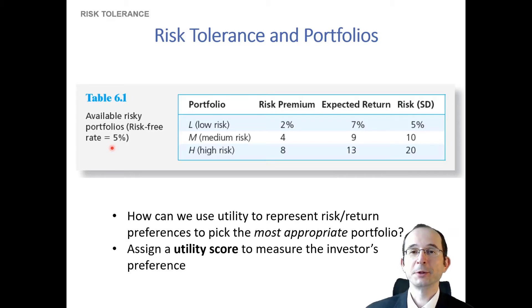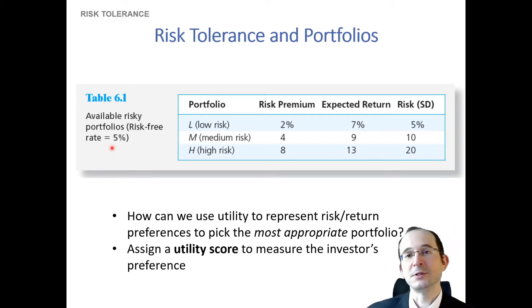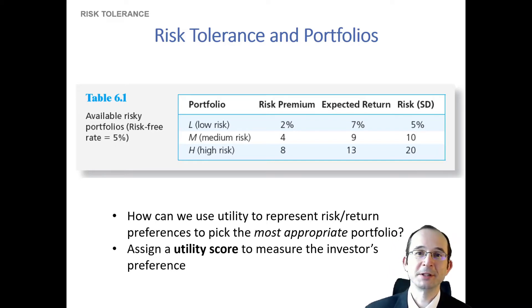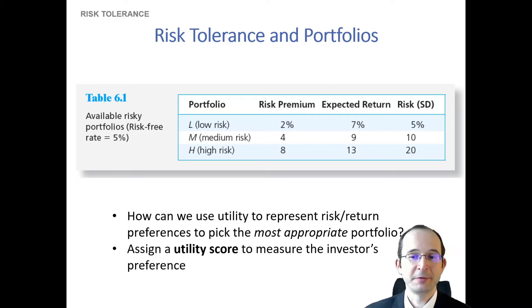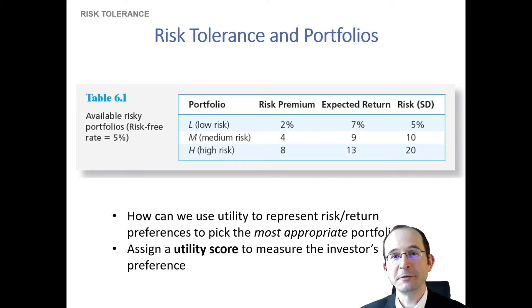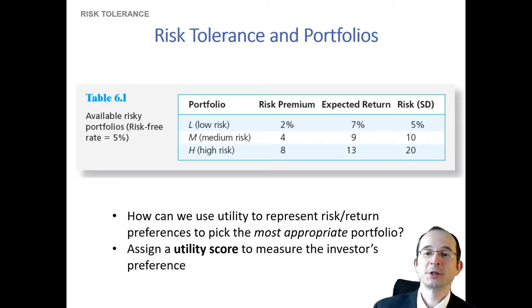Just as we were able to compare discrete payoffs in payoff trees for a risky versus riskless portfolio in the preceding discussion, let's again assign a utility function and actually calculate a utility score to measure the investor's preference over these portfolios. That would give us a way to compare which portfolio a particular investor might find preferable. We want a utility function that is increasing in expected returns, because everybody likes gains and nobody really likes losses. We also want it to be decreasing in risk, and to capture the idea that risk aversion can be varying.